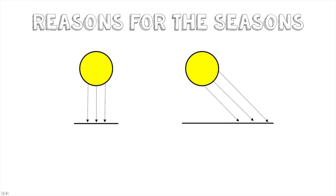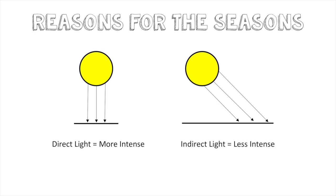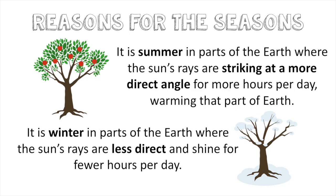Now that we know the biggest misconception, let's look at what the actual reasons for the seasons are. The first thing we need to understand is direct and indirect light. When light is direct it's coming down and striking the surface at a perpendicular angle — at 90 degrees — and it's more intense and stronger. When light comes in at an angle it's indirect and it's weaker. It's summer in parts of the Earth where the Sun's rays are striking at a more direct angle for more hours per day, and it's winter where the Sun's rays are less direct and shine for fewer hours a day.